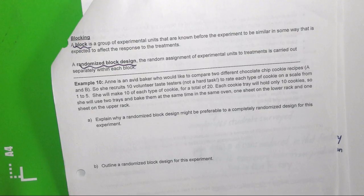Example 10. Ann is an avid baker who would like to compare two different chocolate chip cookie recipes, A and B. She recruits 10 volunteer taste testers to rate each type of cookie on a scale from one to five. That's not a hard task. She will make 10 of each type of cookie for a total of 20. Each cookie tray will hold only 10 cookies, so she will use two trays and make them at the same time in the same oven. One sheet on the lower rack and one sheet on the upper rack. Explain why a randomized block design might be preferable to a completely randomized design for this experiment.